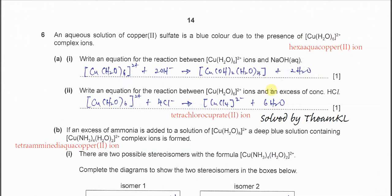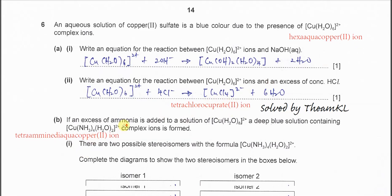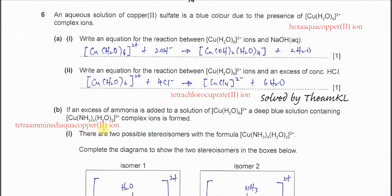There are three most common complex ions of copper. The first is the hexa aqua copper(II) ion. Another common complex ion is the tetrachlorocuprate(II) ion — copper with four chloride ligands. And another common complex ion is the tetraamine diaqua copper(II) ion, which contains four ammonia and two water ligands.